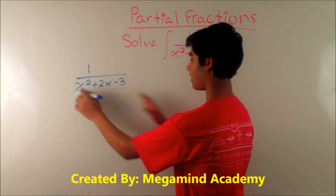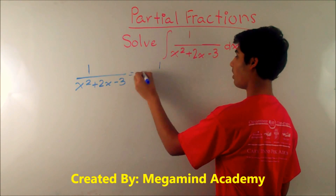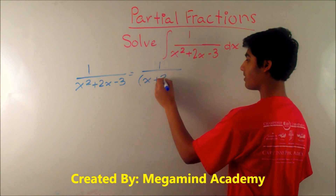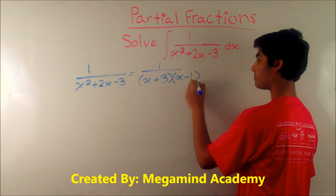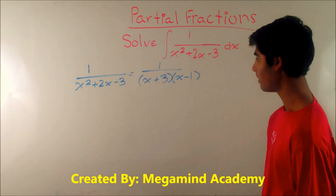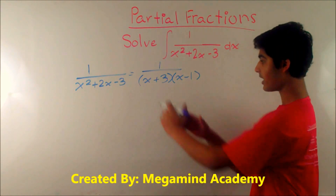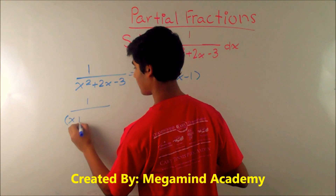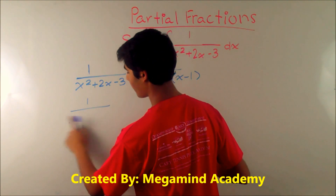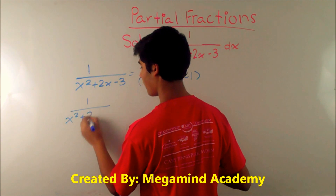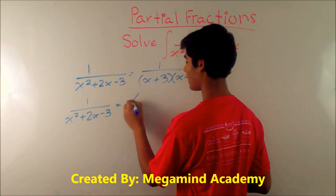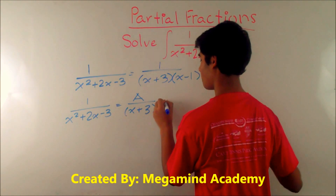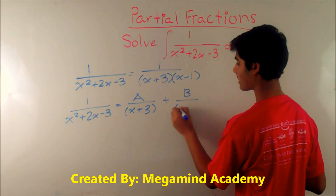Let's first try and see if we can factor the denominator and write this in another way. We get 1 over — the factorization of this denominator would be x plus 3 times x minus 1. Now let's try and split this fraction up. We get 1 over x squared plus 2x minus 3, which is equal to A over x plus 3 plus B over x minus 1.